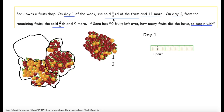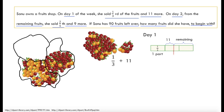She sold 11 more in addition to the one third. So we take 11 fruits and put them — we have plus 11. Now in this bar model, how do we know what that 11 is? We really don't know. These two parts together represent the 11 sold plus whatever is remaining on day 1.